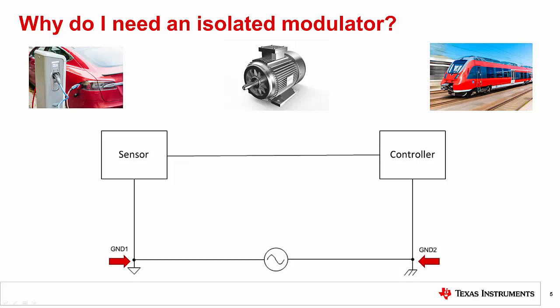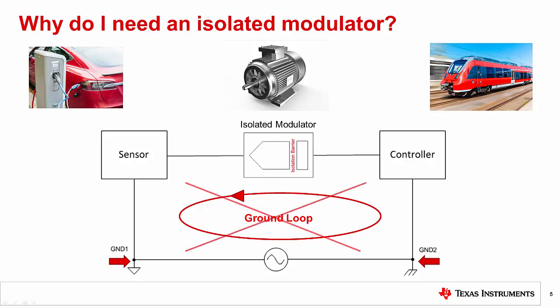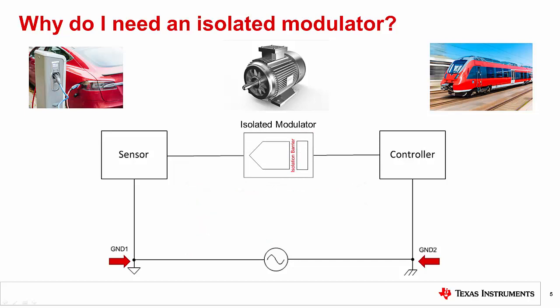Electric motors can inject large noise currents into the ground, thus creating a ground loop current that can appear in the signal path. Isolated modulators remove the signal path noise from the ground loop and protect the system from ground loop potential differences.